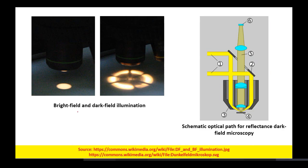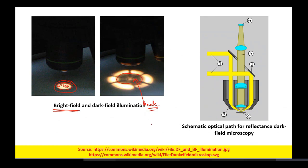In a bright field system, if we place paper on the mechanical stage, the whole region is illuminated with bright light. However, when we apply the dark field patch stop, the central part becomes dark. This is because the stop filter prevents light from the central portion of the light source from reaching the objective.